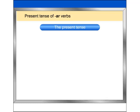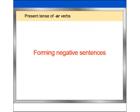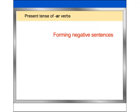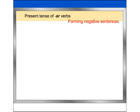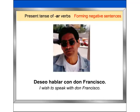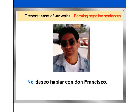Now let's look at how to form a negative sentence in Spanish. In the sentence Deseo hablar con Don Francisco, the word no is placed before the conjugated verb: No deseo hablar con Don Francisco. Here, the Spanish word no means not.